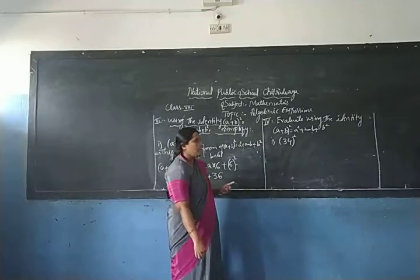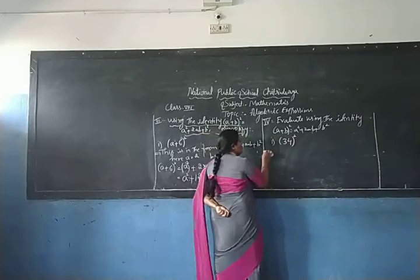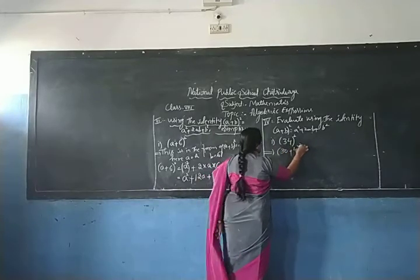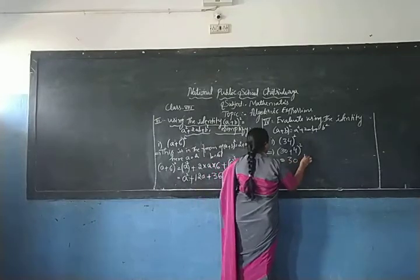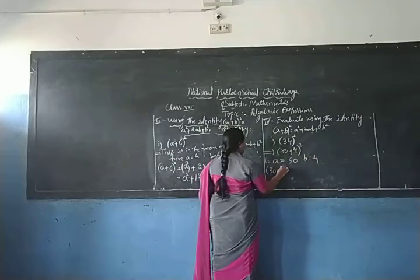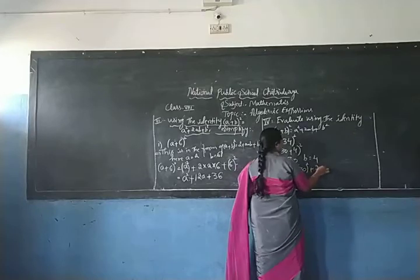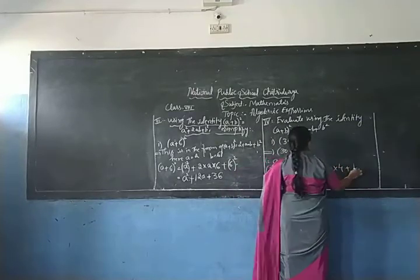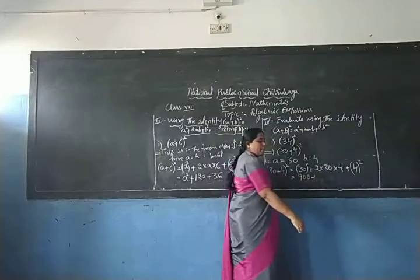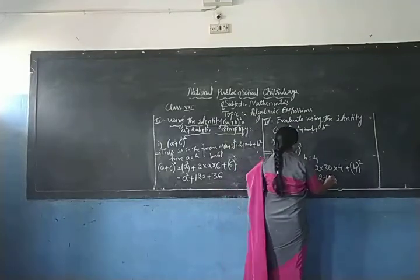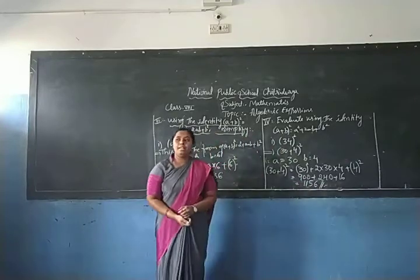For the fourth problem, evaluate 34² using the same identity. We write 34 as (30+4)², which is in the form of (a+b)² where a = 30 and b = 4. So 30² + 2×30×4 + 4² = 900 + 240 + 16 = 1156. The final answer is 1156.